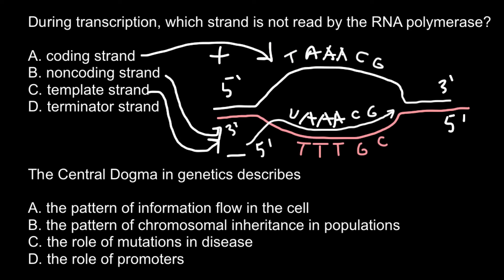Now you can answer the question: during transcription, which strand is not read by the RNA polymerase? The template strand is read by RNA polymerase, and the coding strand is not read by RNA polymerase. As for the terminator strand, there is no such strand, so we can cross out that answer completely.